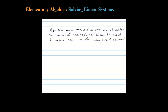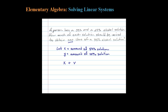A person has a 50% and a 25% alcohol solution. How much of each should be mixed to get 200 liters of a 35% alcohol solution? Let X be the amount of 50% solution and Y be the amount of 25% solution. In the end, those amounts have to add up to 200 liters.